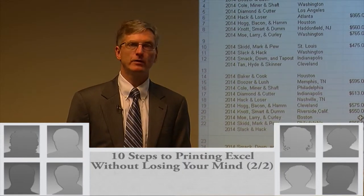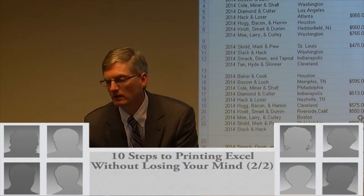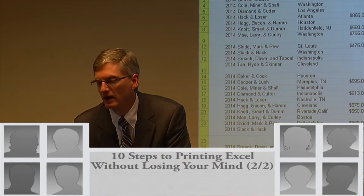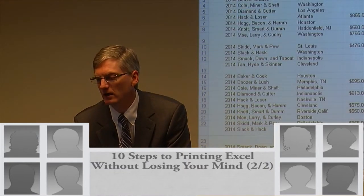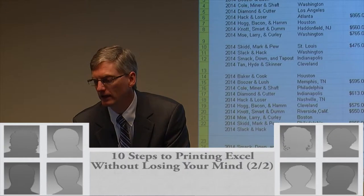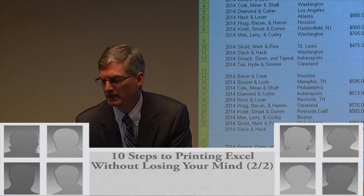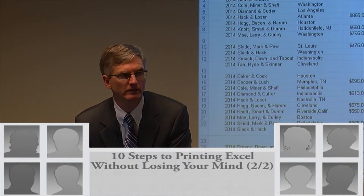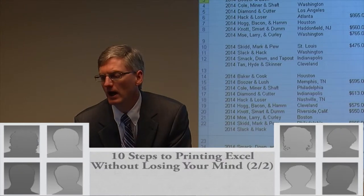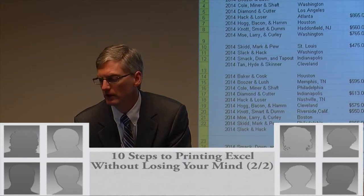To hide a column, you simply select it. If I wanted to hide column G, notice how if I hover over column G, I get that down-facing arrow, which allows me to select the whole column. Right-click and choose Hide. That column is now hidden — notice the column headers show F and H but no G. To unhide it, select on either side of it, right-click and choose Unhide.